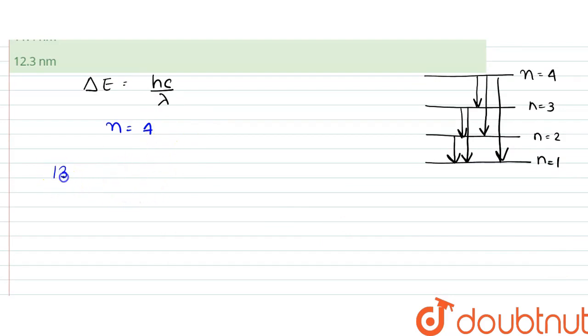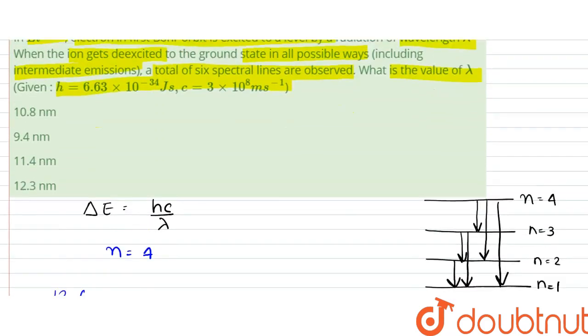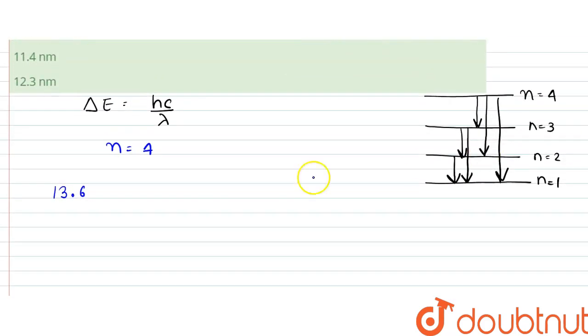So, 13.6 into, the lithium has z equal to three. So, z square is nine minus 0.85 into nine. So, what is 0.85, first of all?